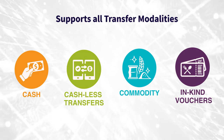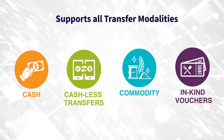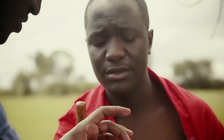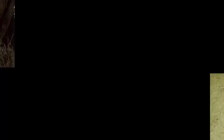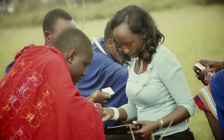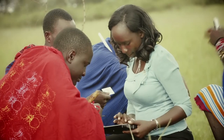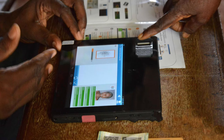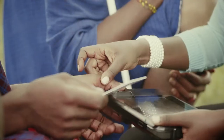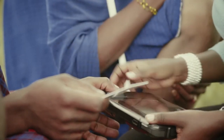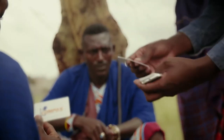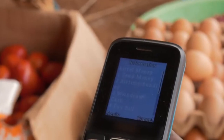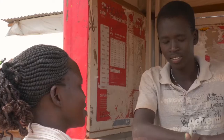Through Compass eBeneficiary System from Compulinks, beneficiaries — either people or households — can quickly be enrolled. This can be done with or without biometric details. Beneficiaries can access their allocated benefits through the use of smart cards and e-vouchers from selected vendors.